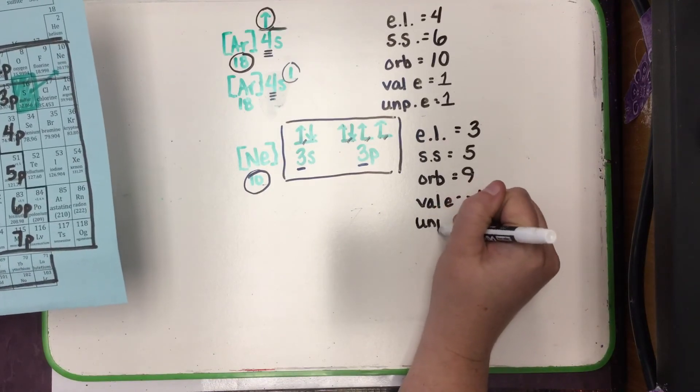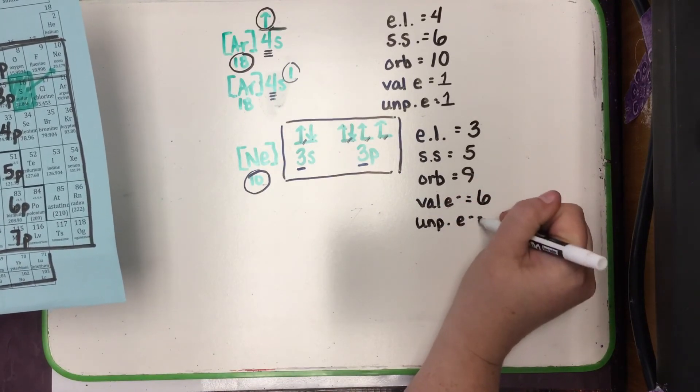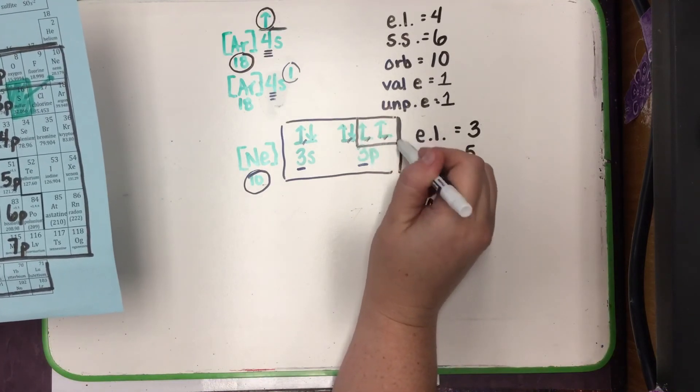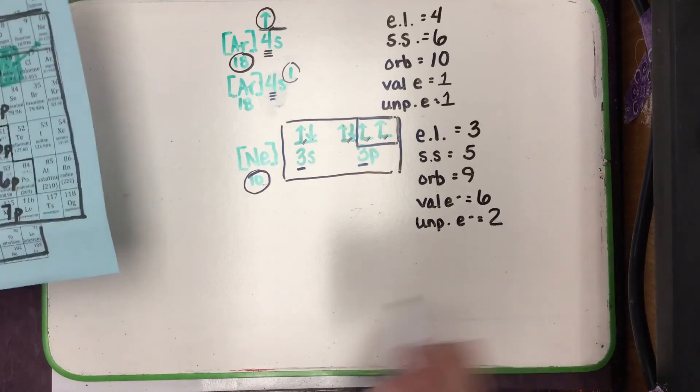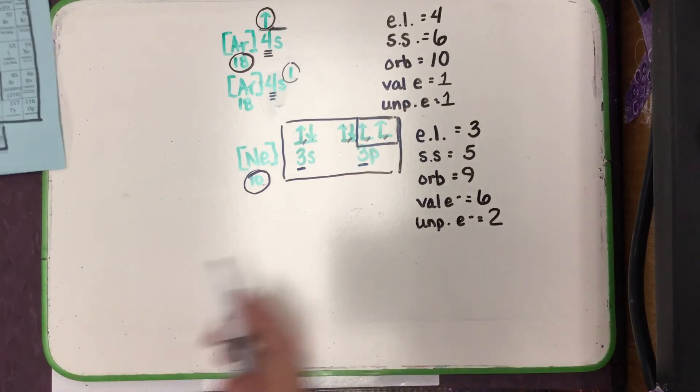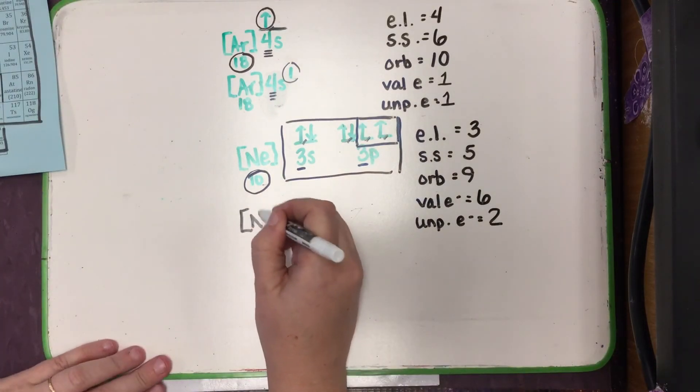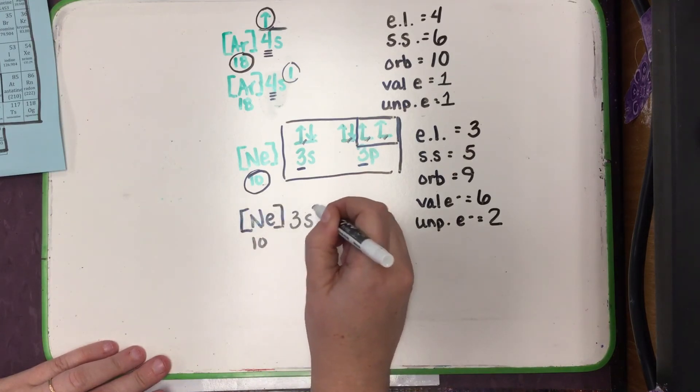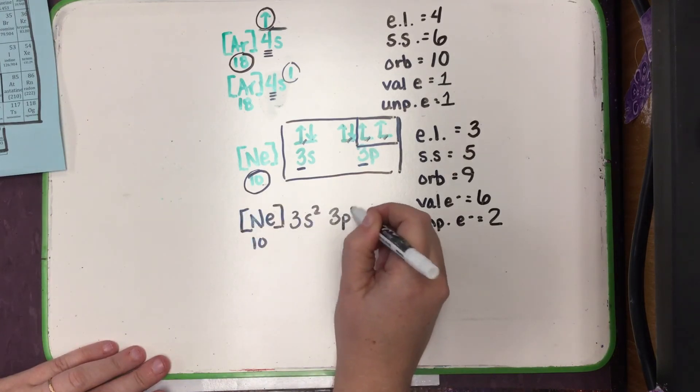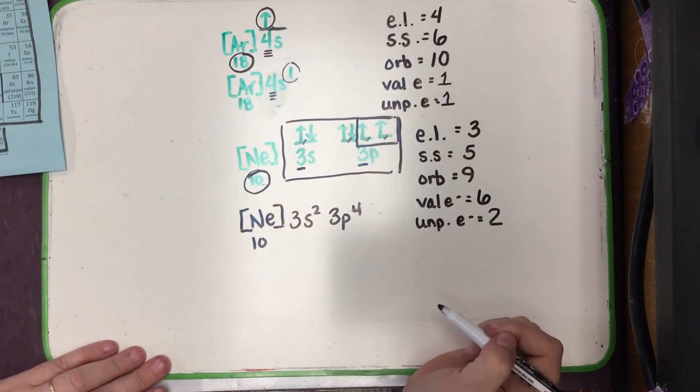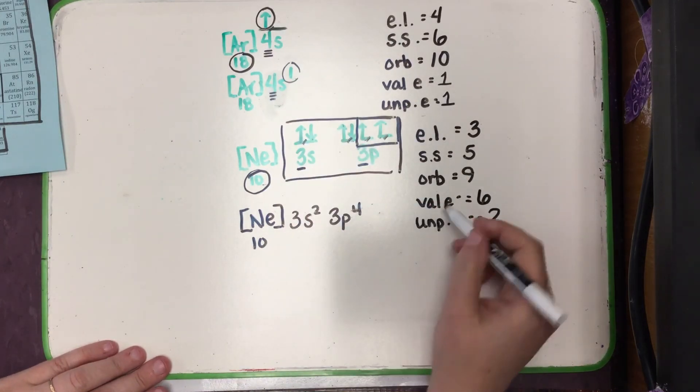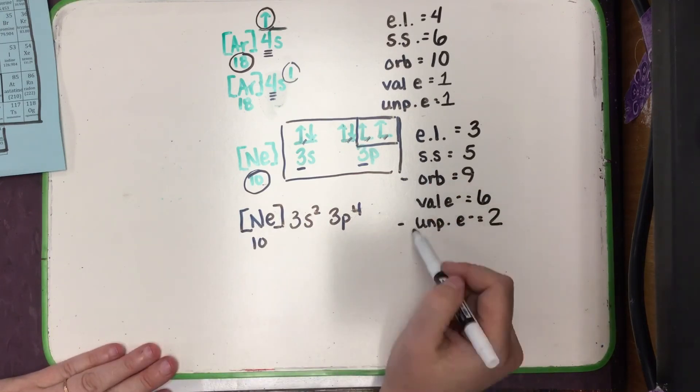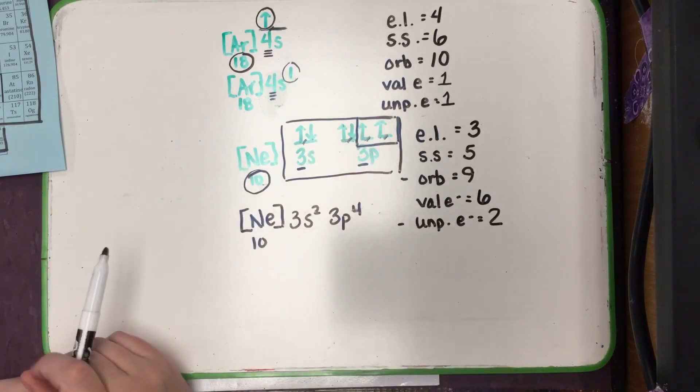And unpaired electrons, those are going to be the ones that don't have a down partner. So that's 2. Even if we had drawn out the electron configuration, the shorthand version, and replaced these arrows with the exponents, we still could have determined everything except the orbitals and the unpaired electrons. These two things you really should be looking at orbital notation for.